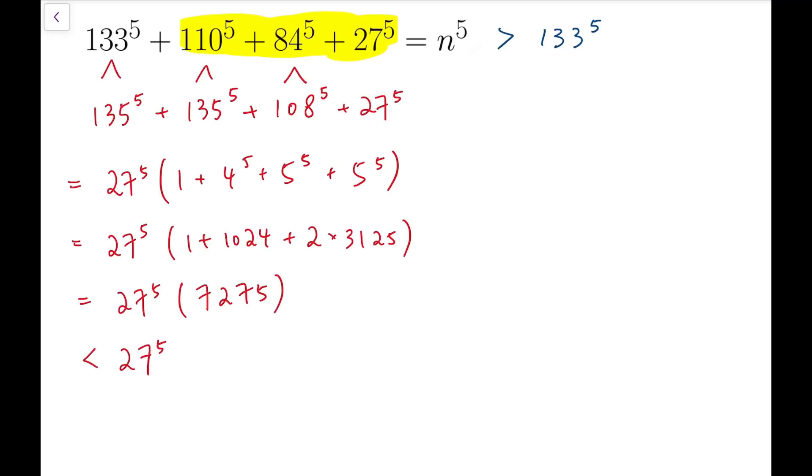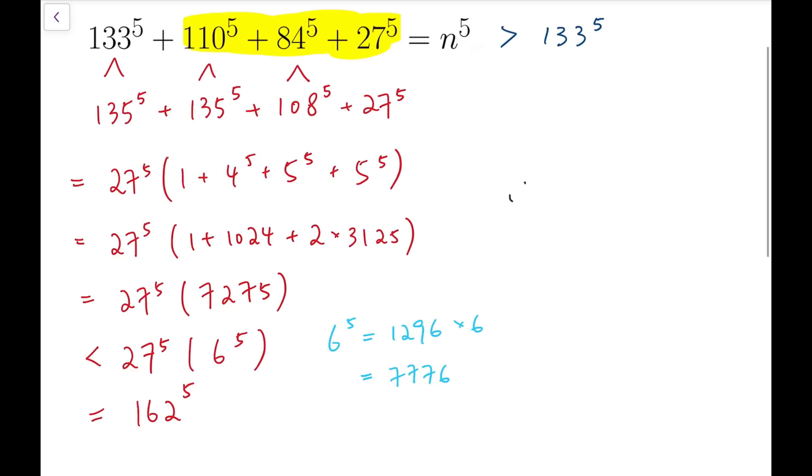But notice that this is actually smaller than 6^5. The number in the bracket is less than 6^5 because 6^5 is equal to 1296 times 6, and that's 7776. So that means this sum altogether is smaller than 162^5 because 27 times 6 equals 162. So we've come to the conclusion that n must be a number between 133 and 162.